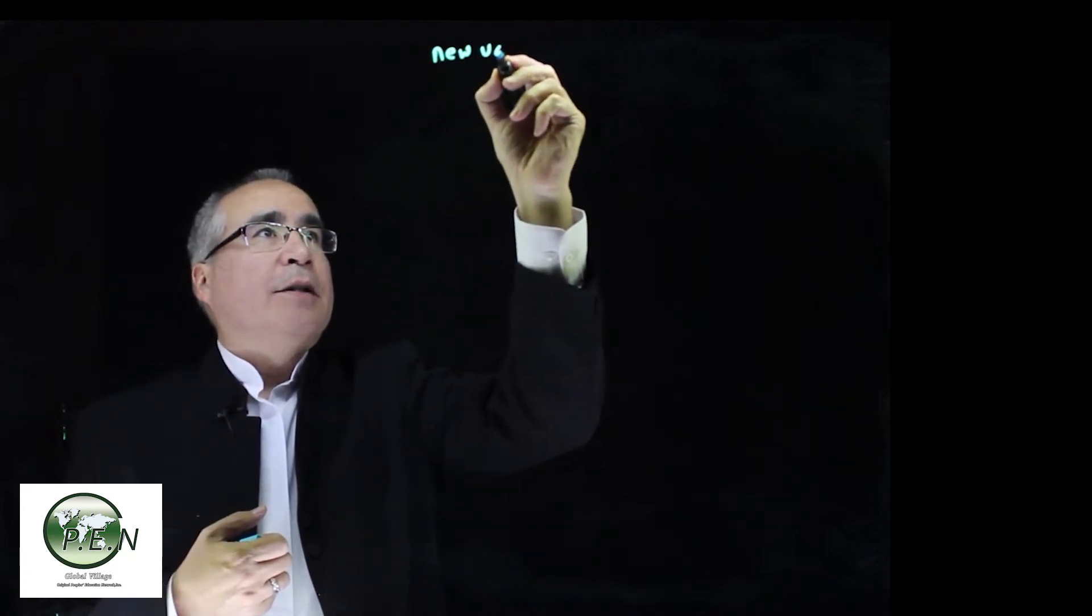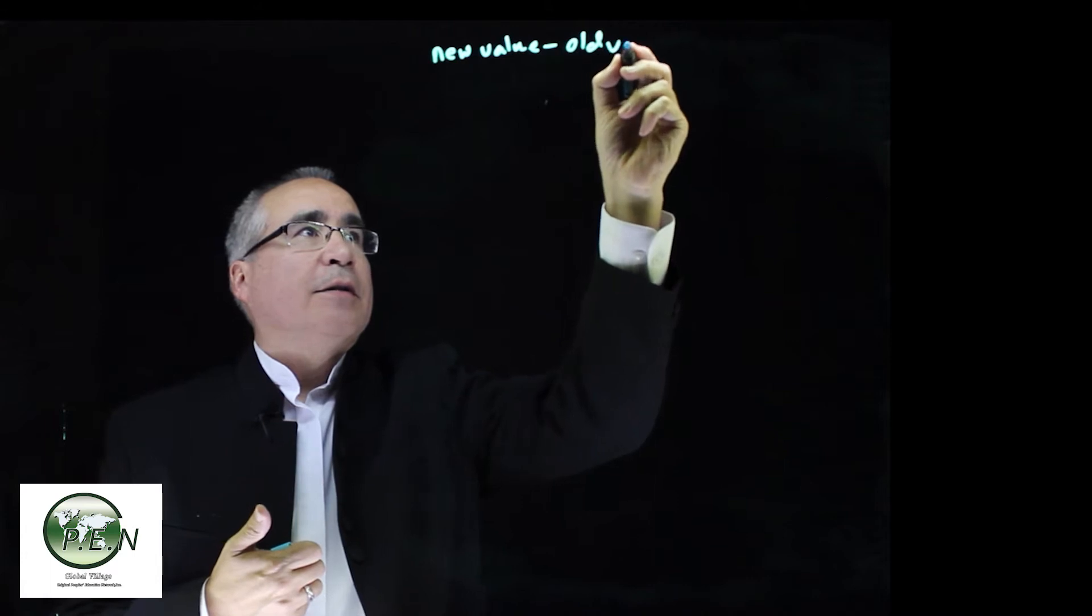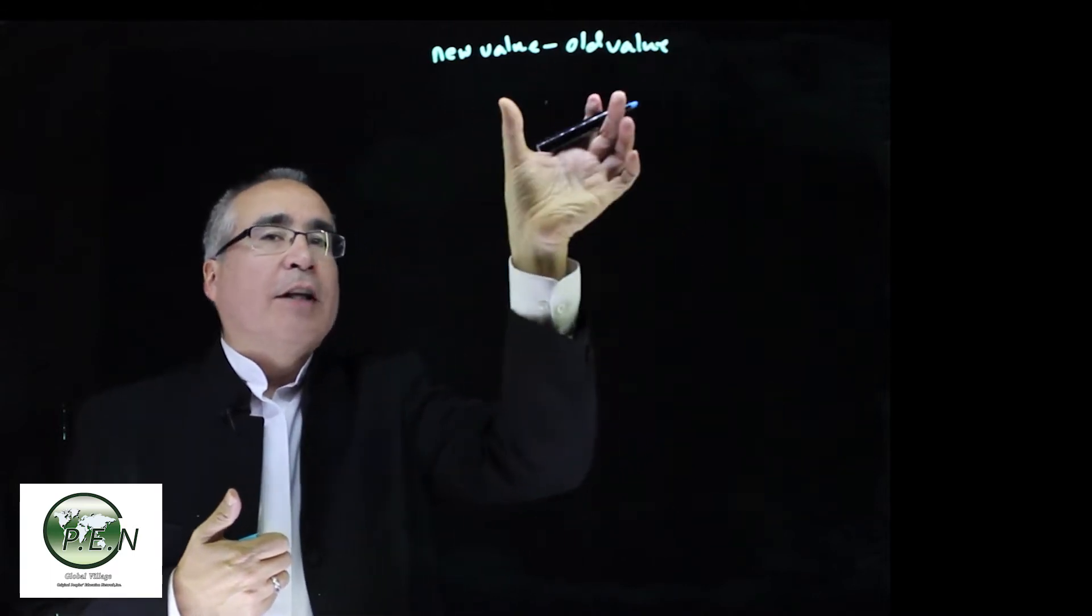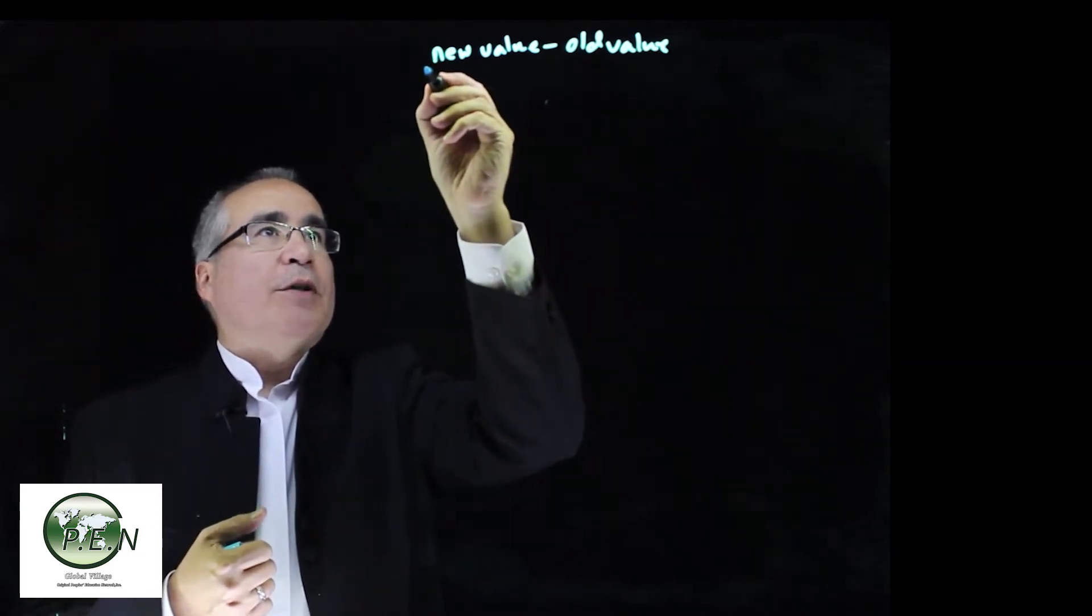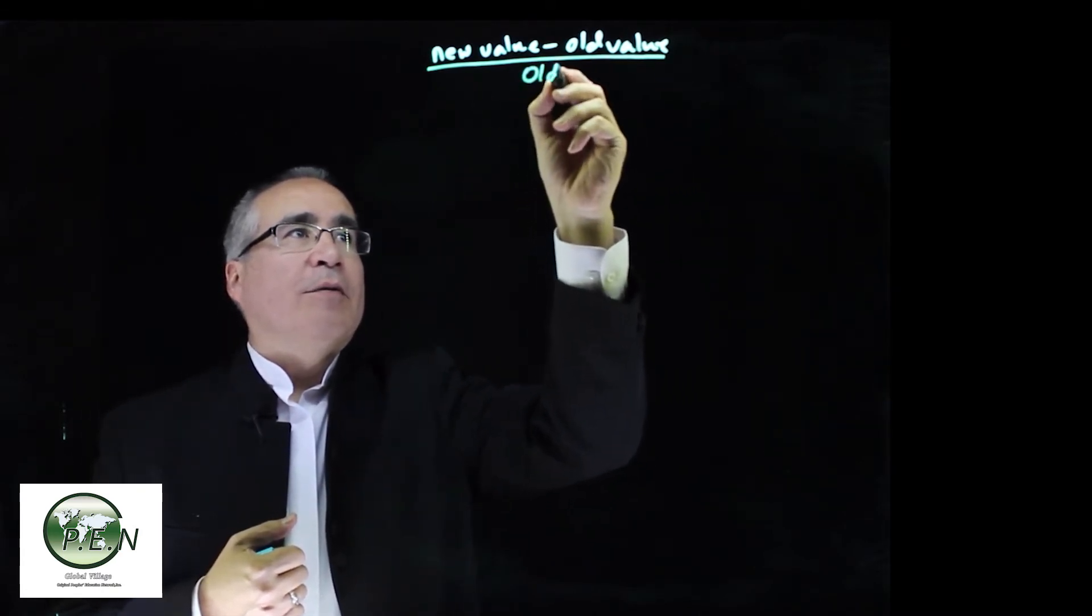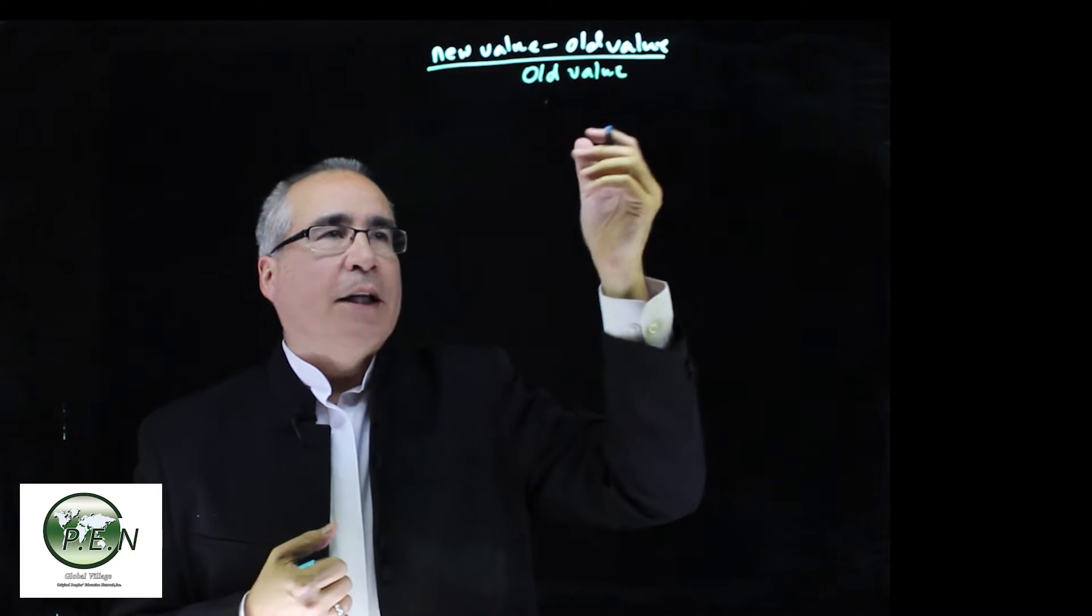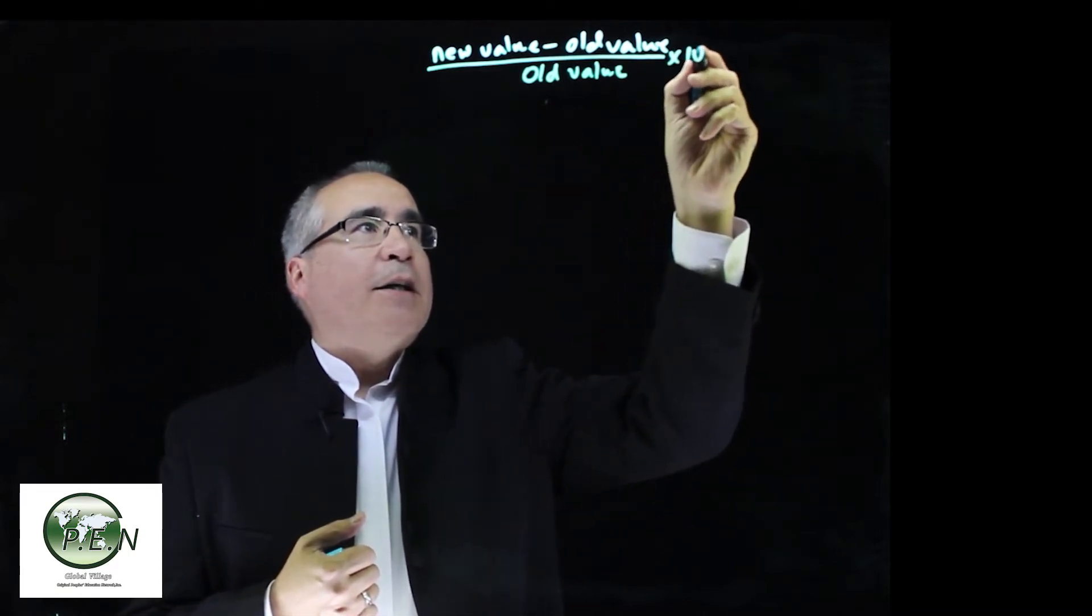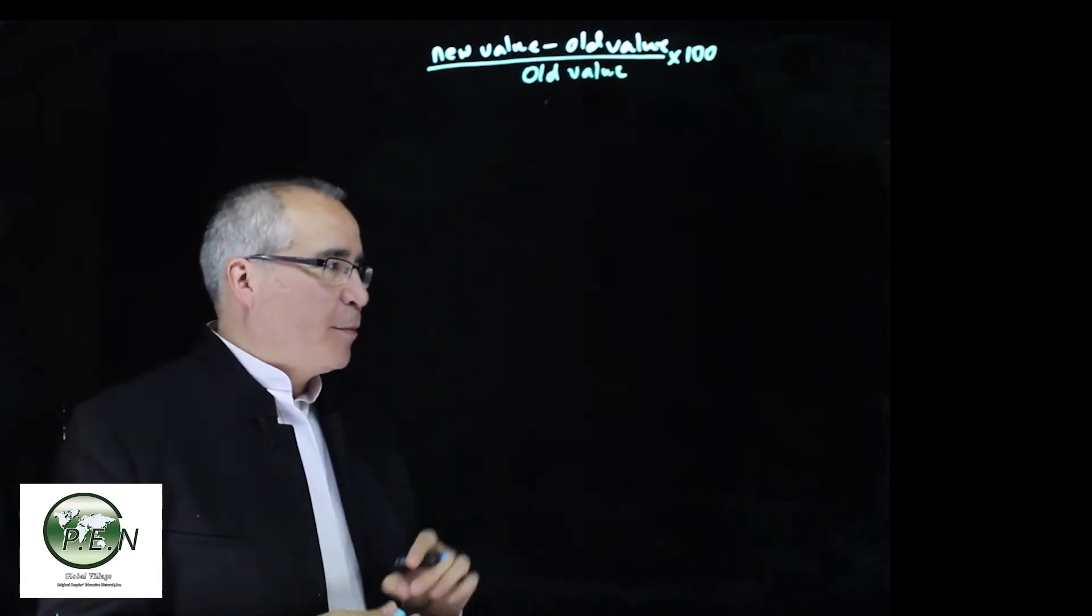And for that, there's a formula that we can use. We've got the new value, we're going to subtract the old value. That gives us the amount of the change, like an investment or something. But to get the percent of the change, what we do is then divide by what we started with, which is the old value. Because that's percent in relationship to the old value. We'll multiply it by 100 to get it to be a percentage. That 100 is always going to be involved somewhere if we're talking about percents.